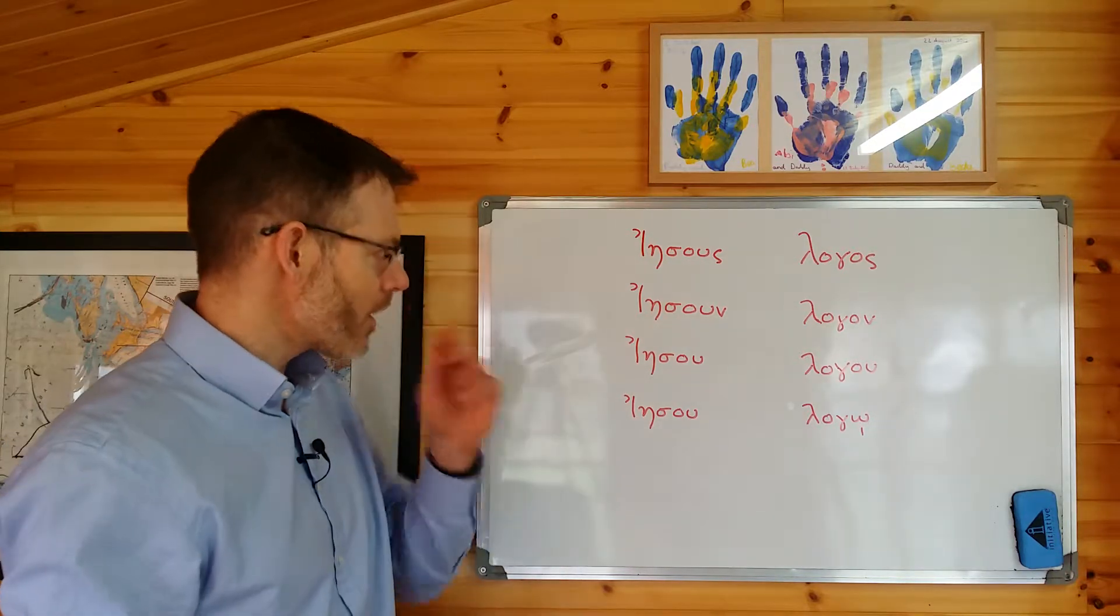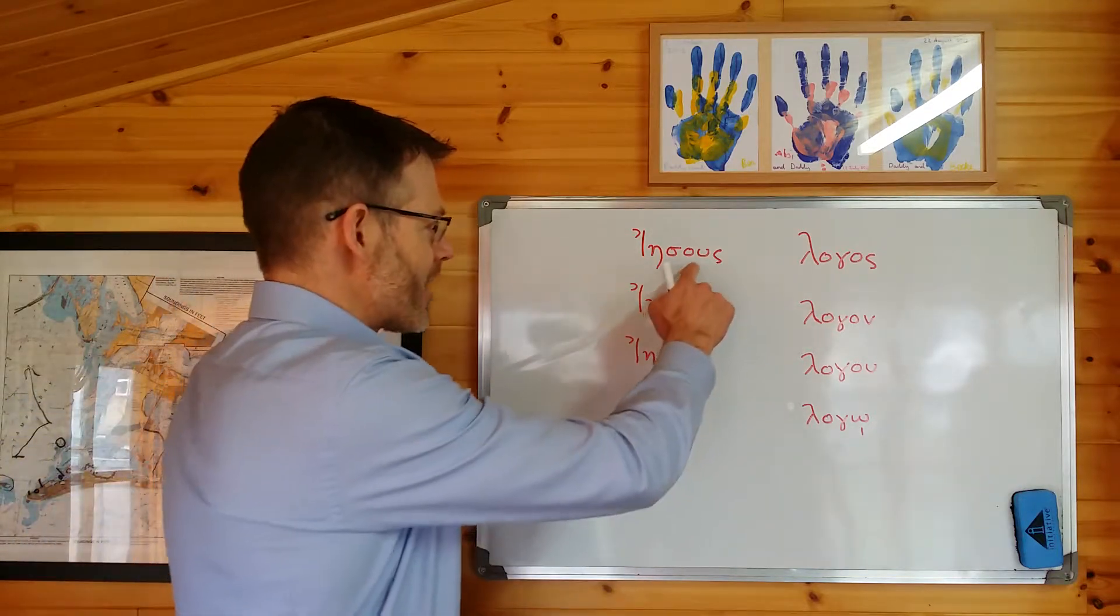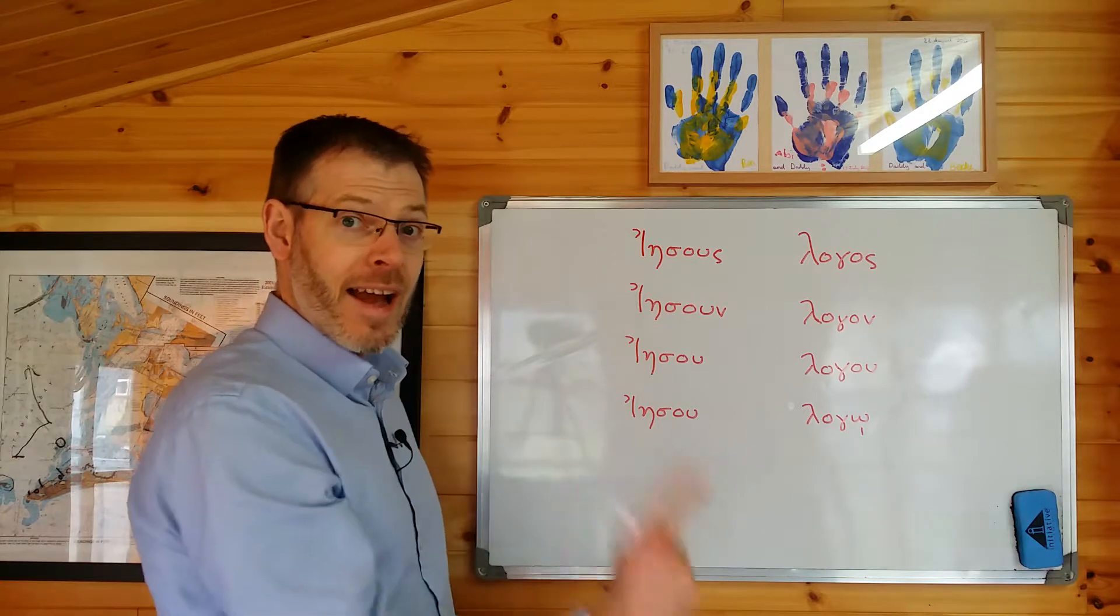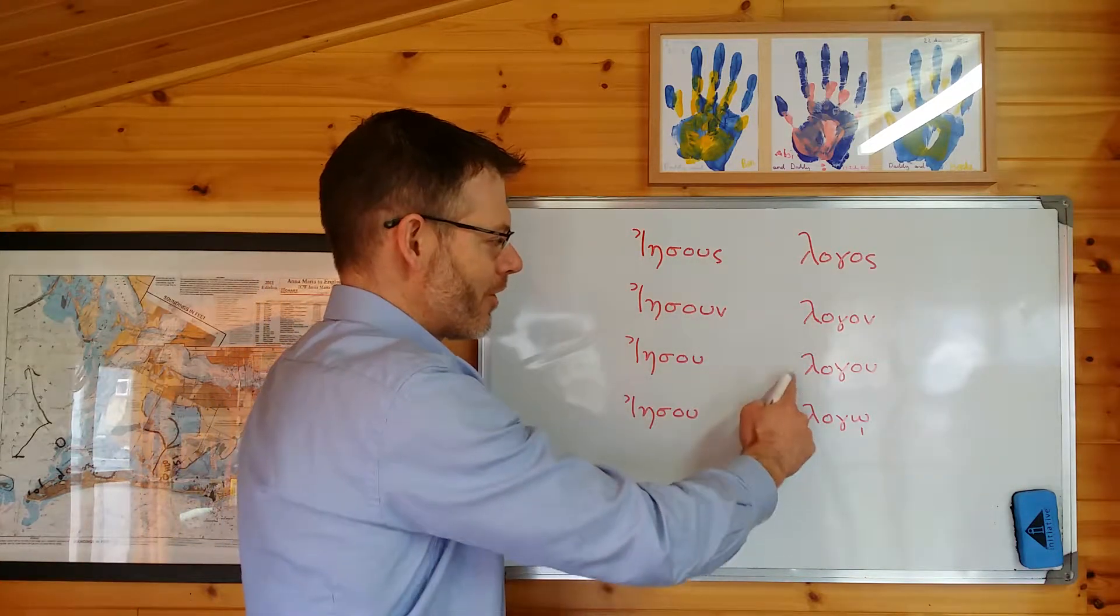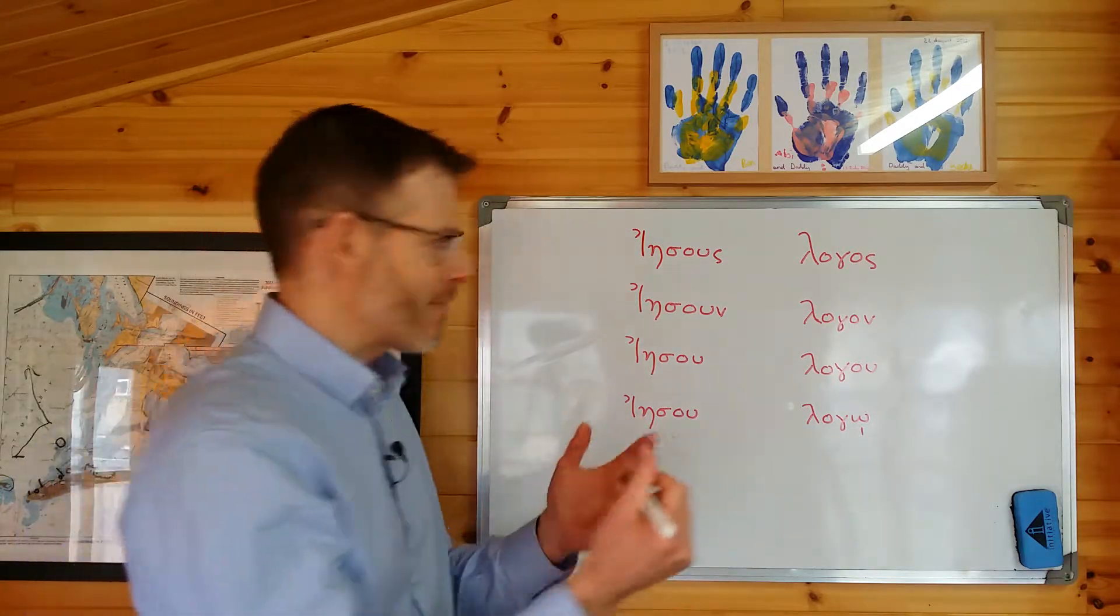So, that's the first thing. The second thing to notice is, really, it's not that irregular. Iesus. Iesun. Iesu. Iesu. And for comparison, a word like logos. Logos. Logon. Logu. Logo. Now, just again to highlight the similarities here.